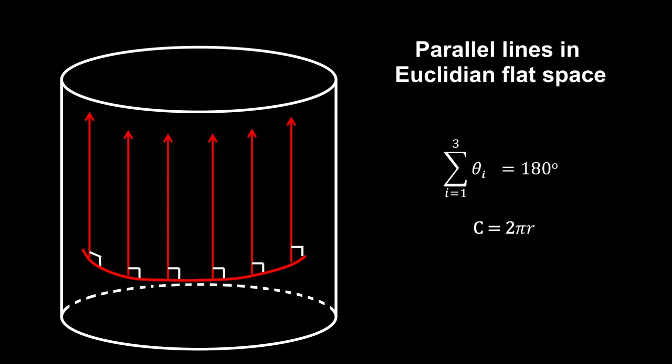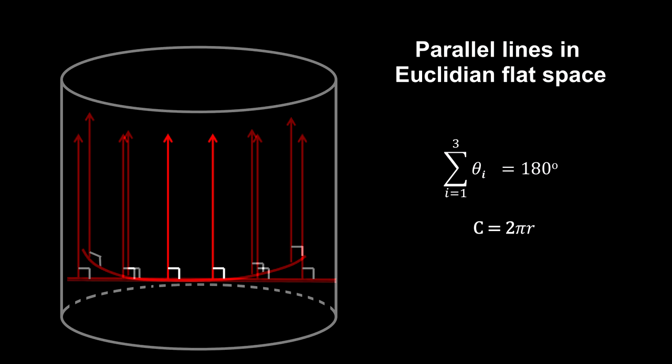Parallel lines remain parallel. The sum of the angles of a triangle is still 180 degrees, and the circumference of a circle is still 2 pi times its radius.